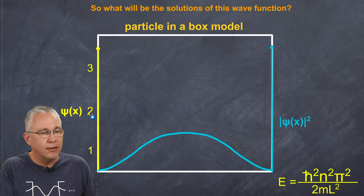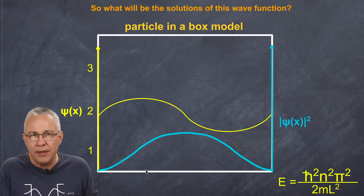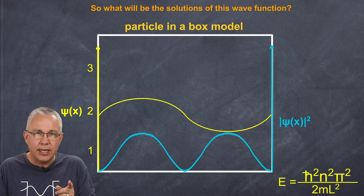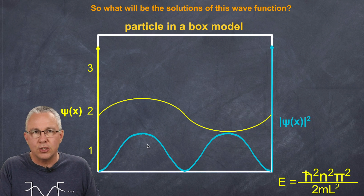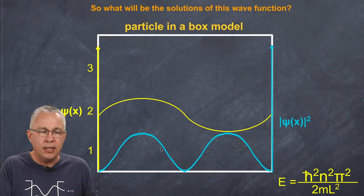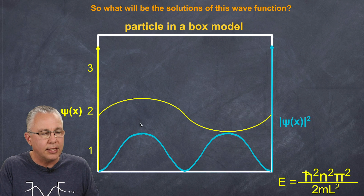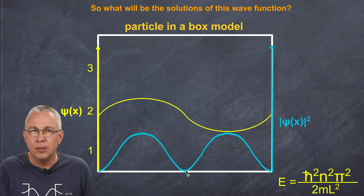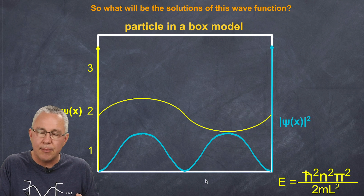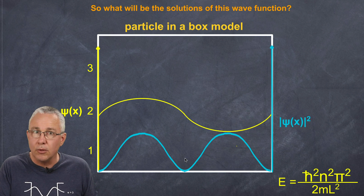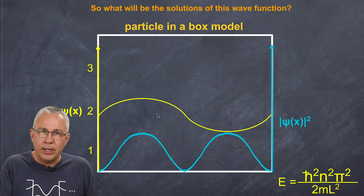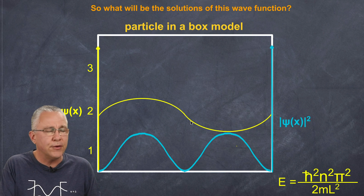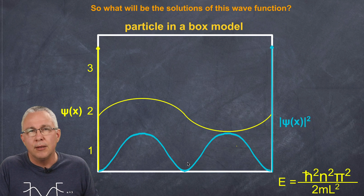Now let's have a look at energy level 2. If I square that, I'm going to get not that, but this. This is where it gets really interesting. That means if I open up the box, the likelihood of me finding the electron is greatest at these points where the amplitude of this curve is greatest, but nothing at the edges and nothing in the middle. In other words, if there's an electron existing in that box, I will never find it in the middle if I were to open it up and look at it.